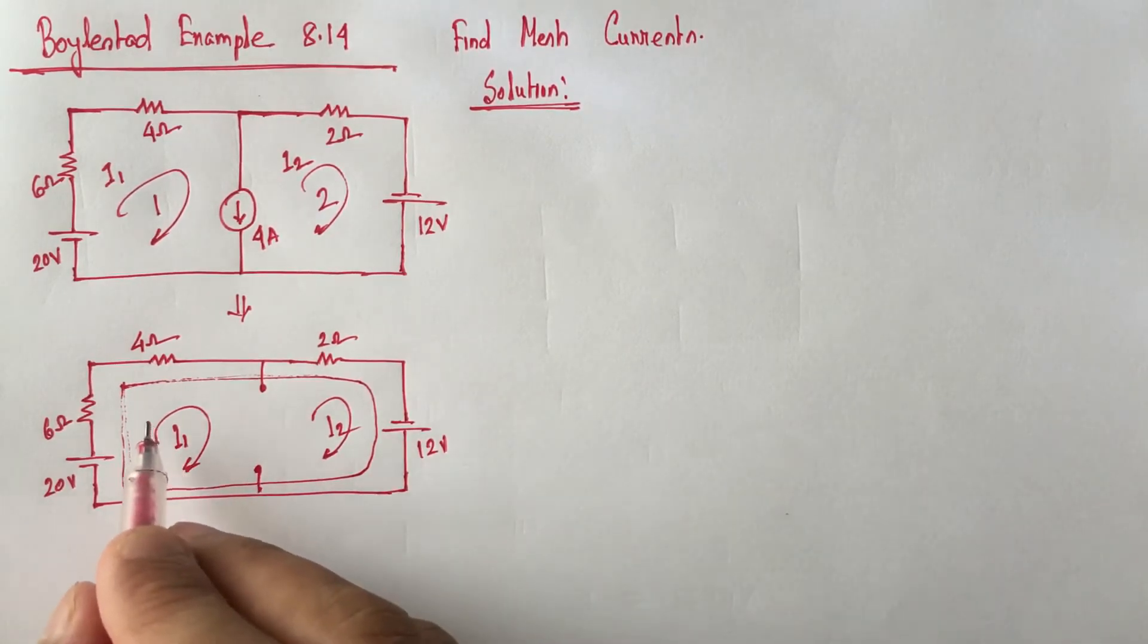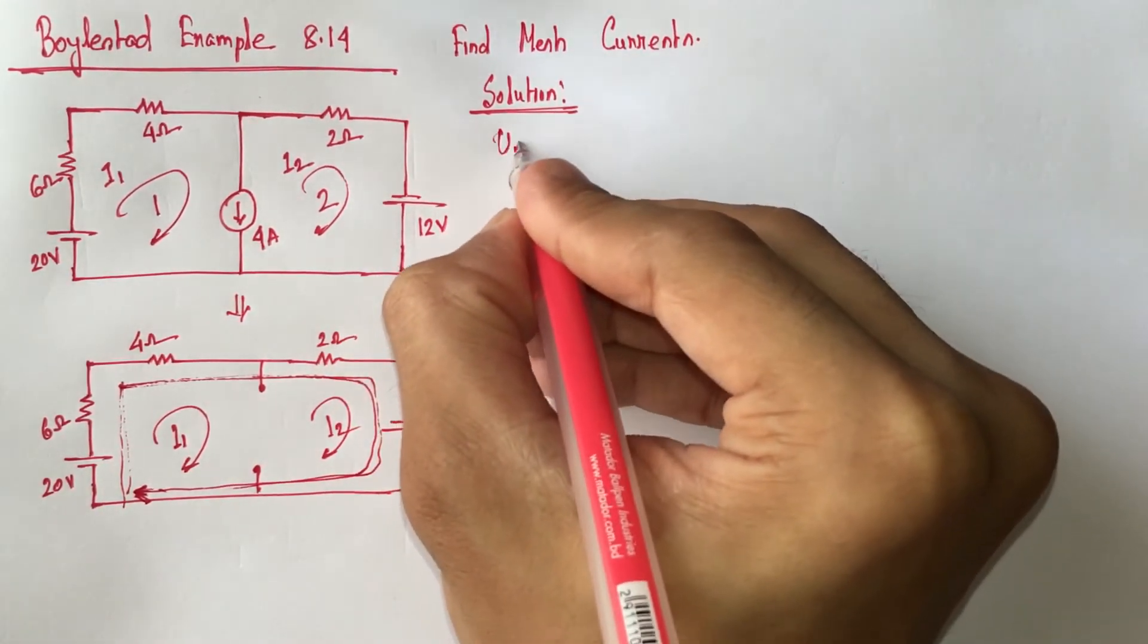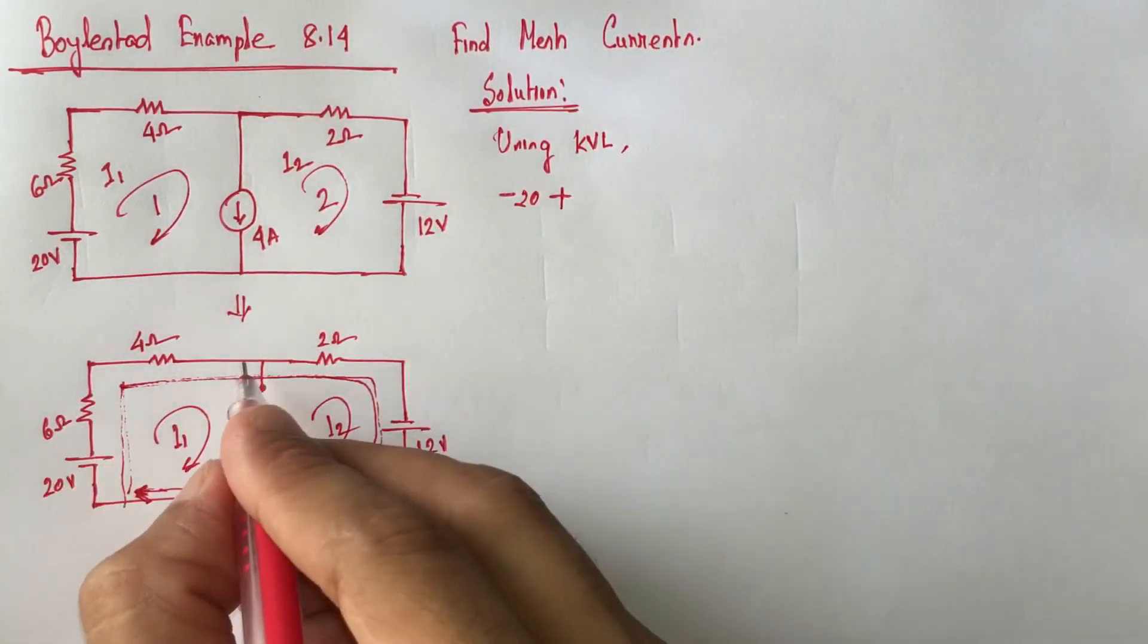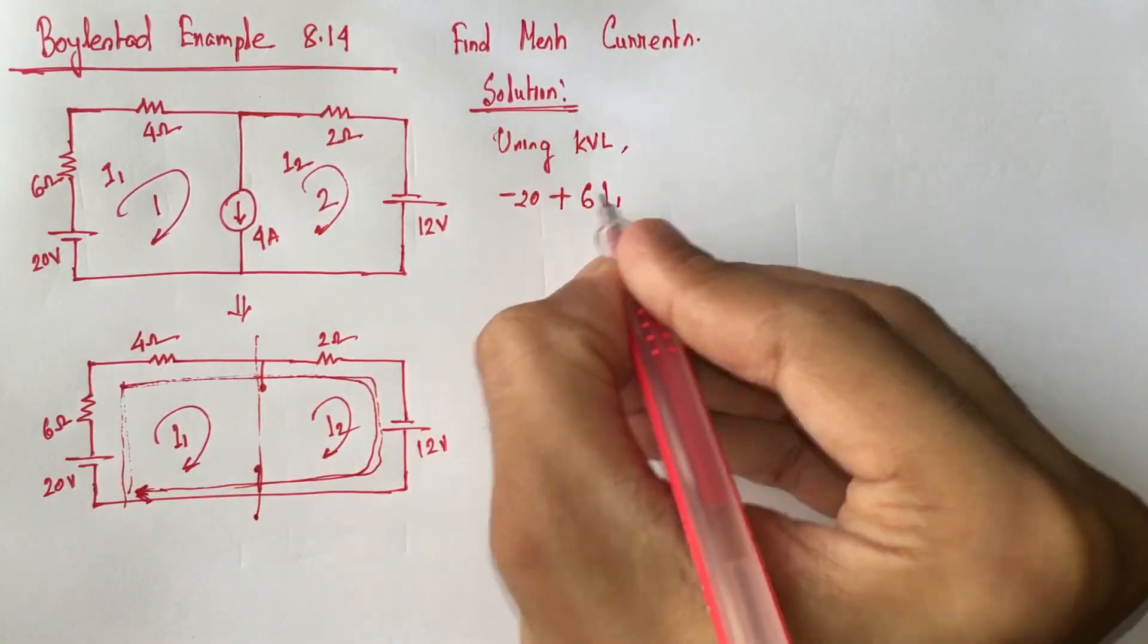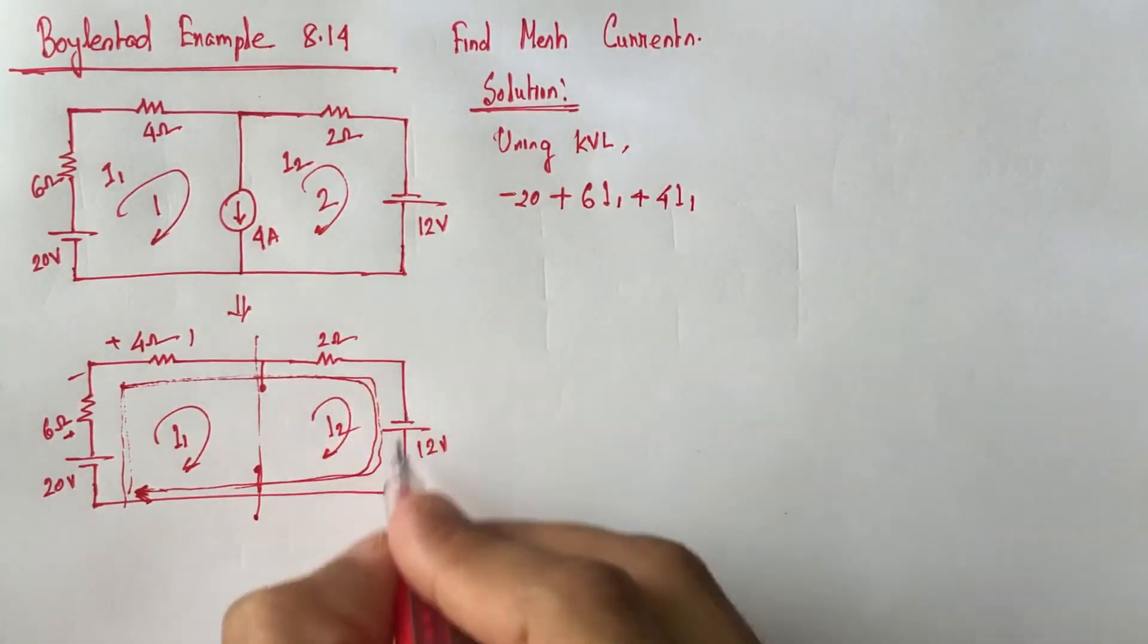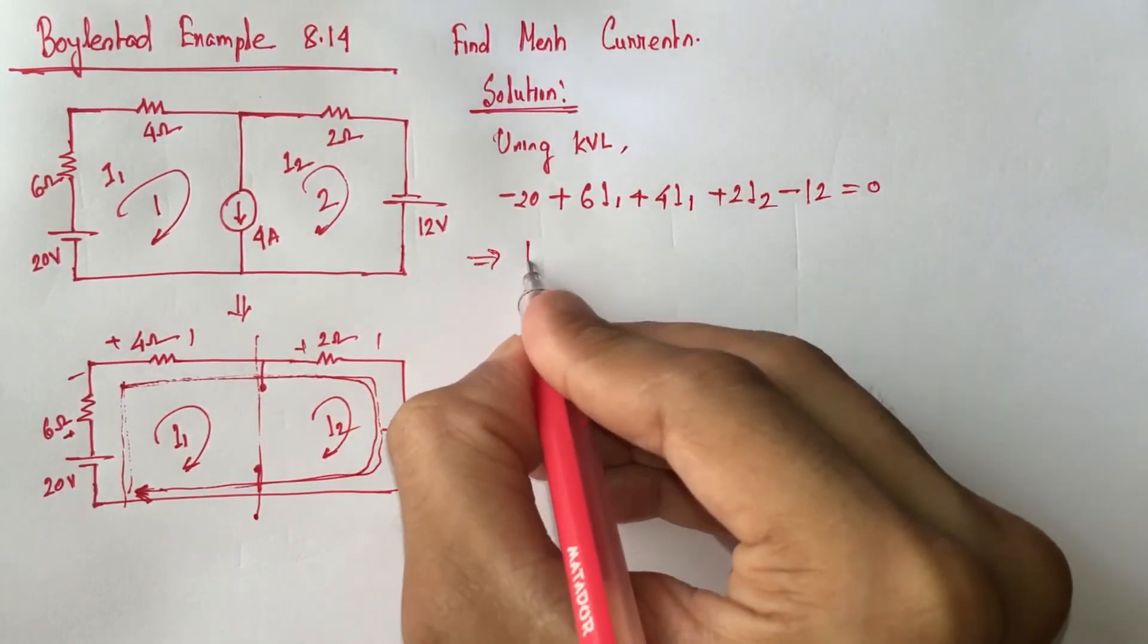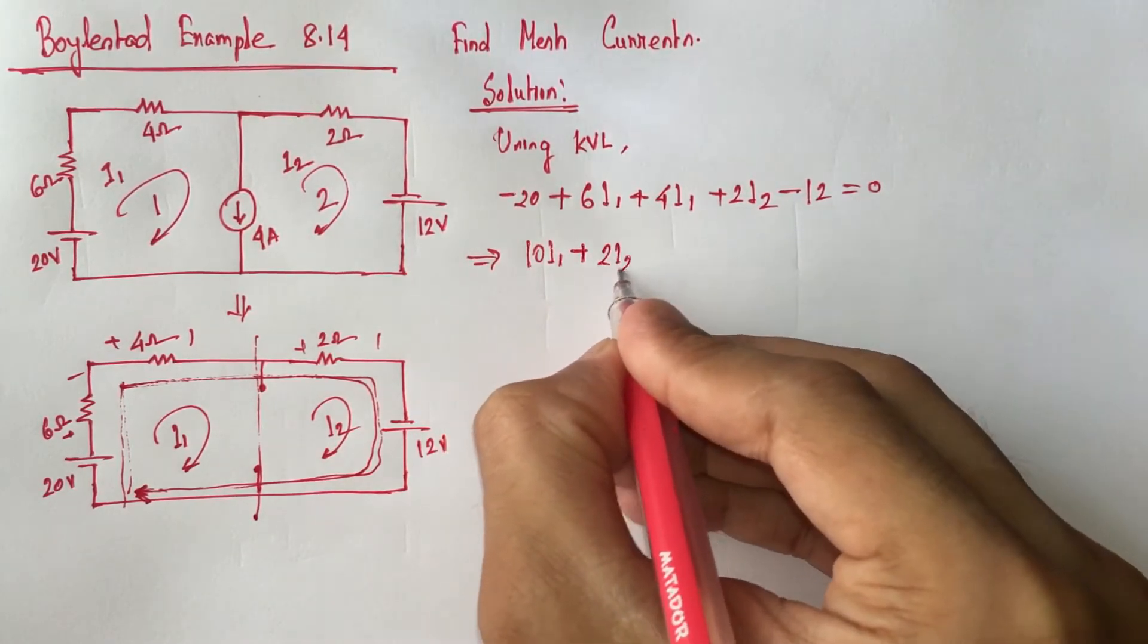If we run Kirchhoff's voltage law through this whole path, we will get using KVL: minus 20 plus 6i1 plus 4i1 plus 2i2 minus 12 equals 0. Simplifying the equation, 10i1 plus 2i2 equals 32. This is equation 1.